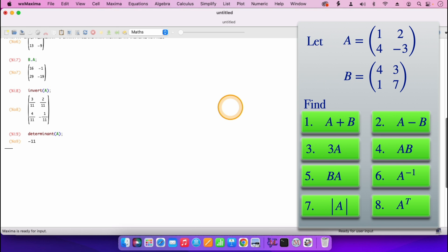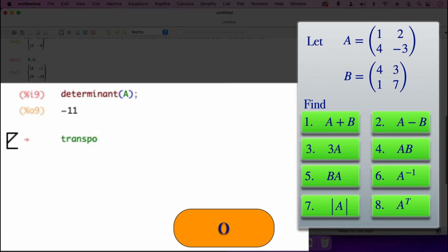For the last question, the transpose of the matrix A. So I'll just say transpose, open parenthesis, then the A. Then I press shift enter. So the transpose of the matrix A is 1, 4, 2, minus 3. Remember that for the transpose of a matrix, the rows become the columns, the columns become the rows, just interchanging them.